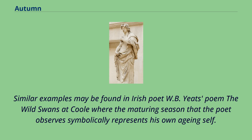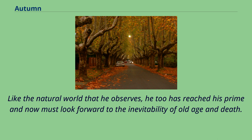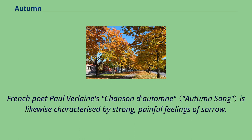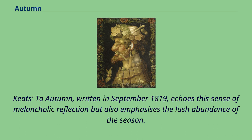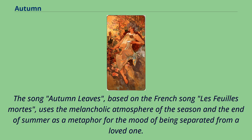Similar examples may be found in Irish poet W. B. Yeats' poem The Wild Swans at Coole, where the maturing season that the poet observes symbolically represents his own aging self. Like the natural world that he observes, he too has reached his prime and now must look forward to the inevitability of old age and death. French poet Paul Verlaine's Chanson d'Automne is likewise characterized by strong, painful feelings of sorrow. Keats' To Autumn, written in September 1819, echoes this sense of melancholic reflection but also emphasizes the lush abundance of the season. The song Autumn Leaves, based on the French song Les Feuilles Mortes, uses the melancholic atmosphere of the season and the end of summer as a metaphor for the mood of being separated from a loved one.